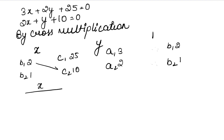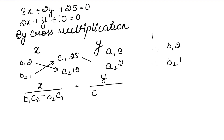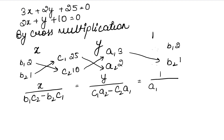So this is what we need to write: x upon (B1·C2 minus B2·C1) equals to y upon (C1·A2 minus C2·A1) equals to 1 upon (A1·B2 minus A2·B1). Look at the arrow mark — it shows the direction of multiplication, first this digit then this digit.